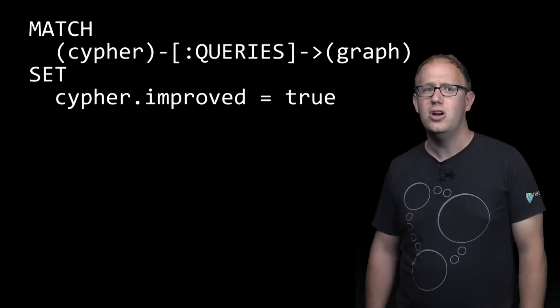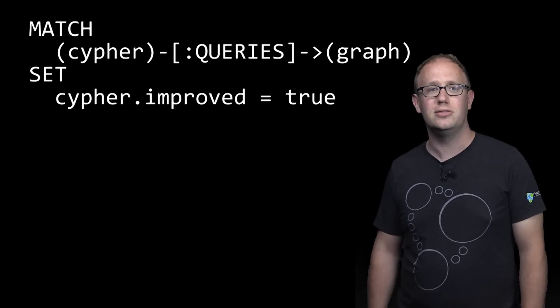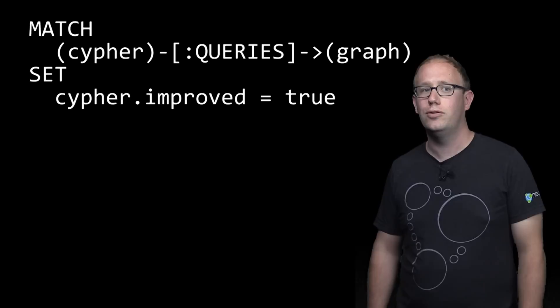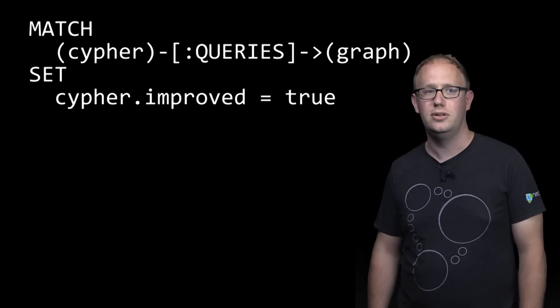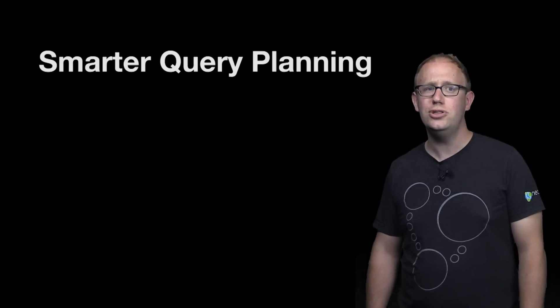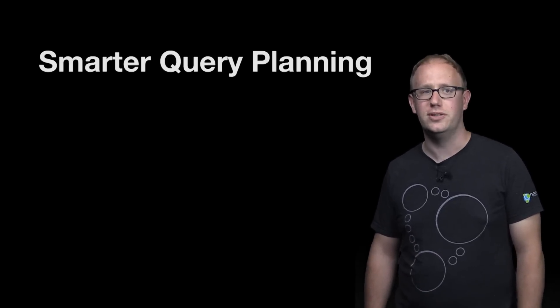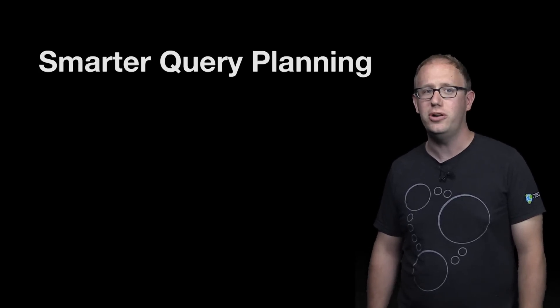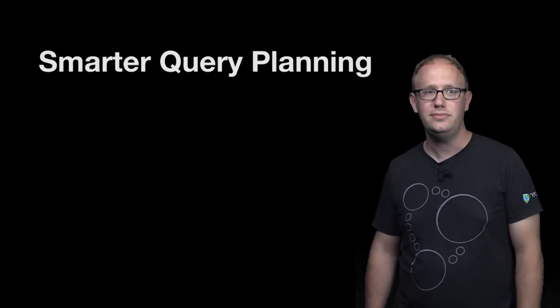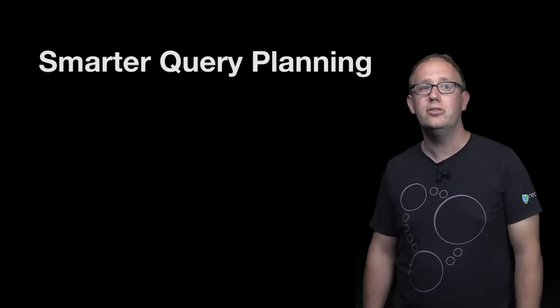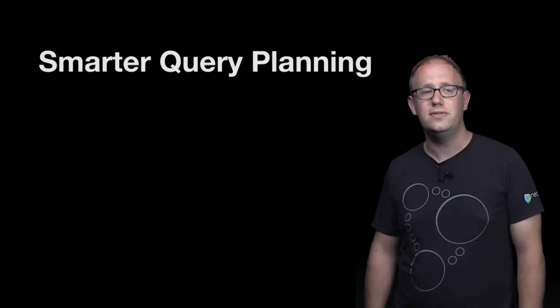We continue to improve Cypher, our declarative query language optimized for graphs. This includes additional indexing improvements for faster full-text queries, including the ends with and contains operators. With the release of 2.2, we introduced a cost-based query planner to improve performance of read queries. We've now extended this support to mixed read-write operations, using statistics of your graph to determine the smartest way to work with your data. These same statistics are also useful to return some types of aggregation queries nearly instantaneously instead of scanning the full graph.